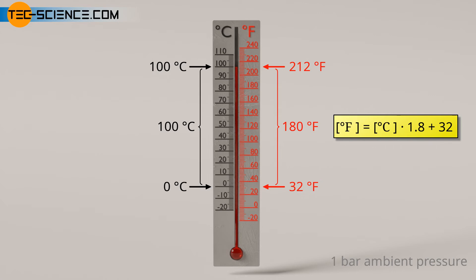Thus, to convert a temperature value from the Celsius scale to the Fahrenheit scale, the given formula applies. Conversely, the following formula applies to the conversion of a given temperature in the unit degree Fahrenheit to degree Celsius.